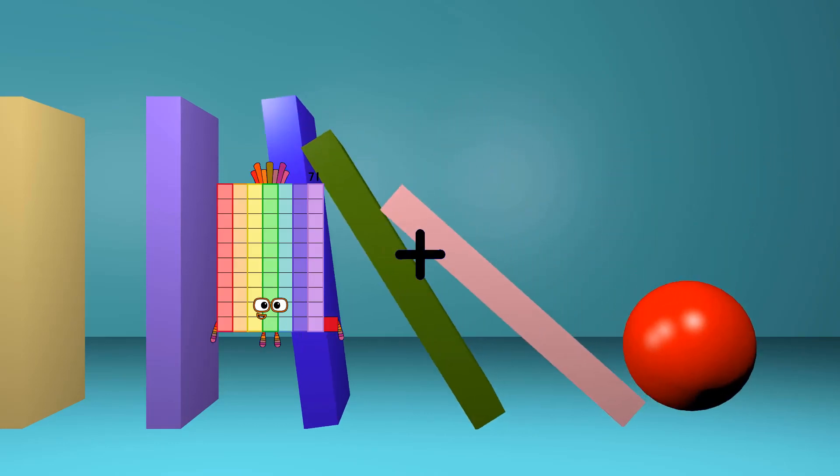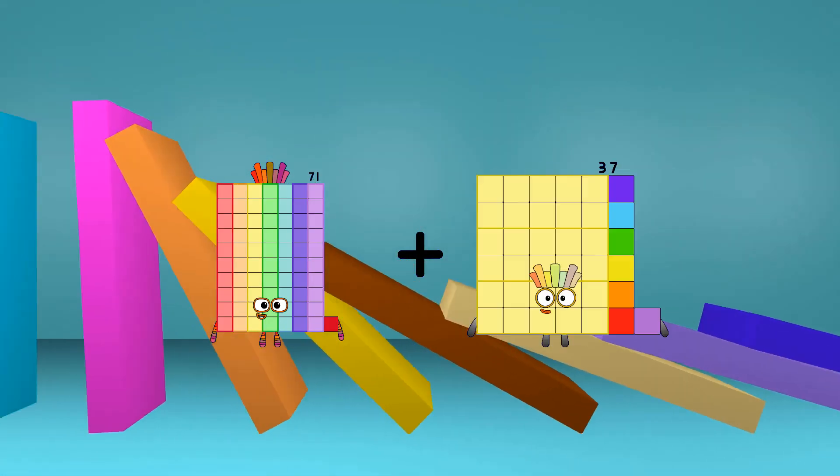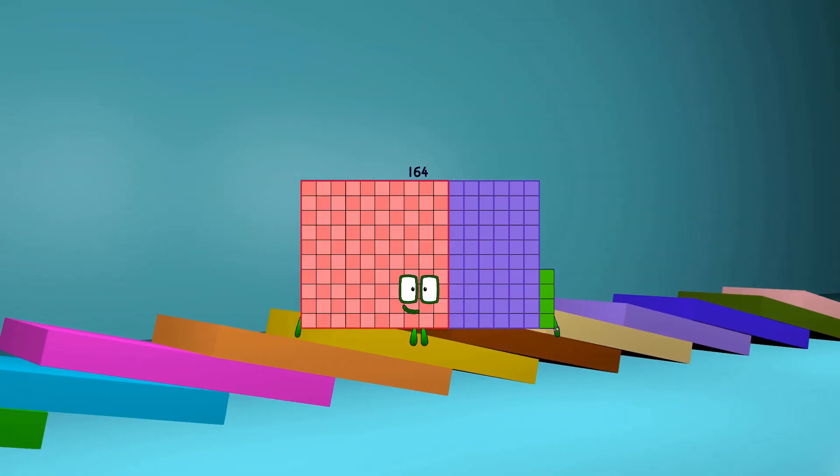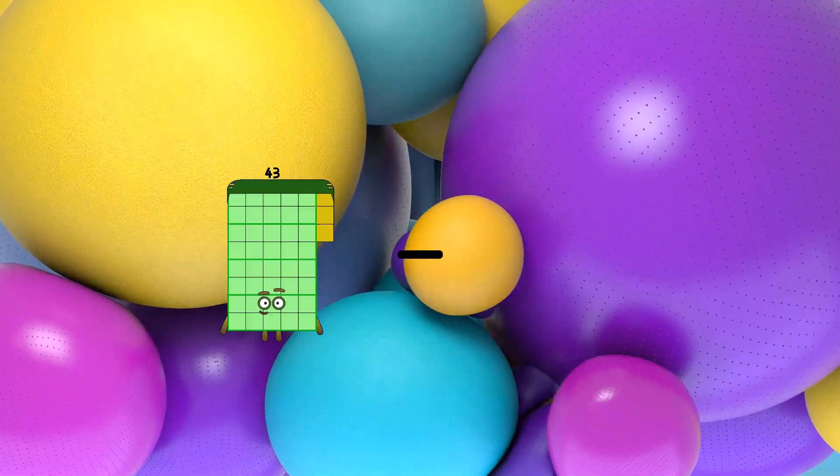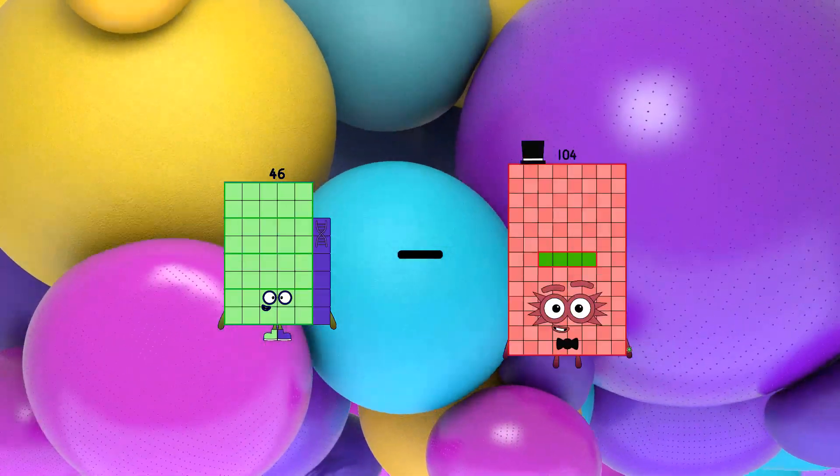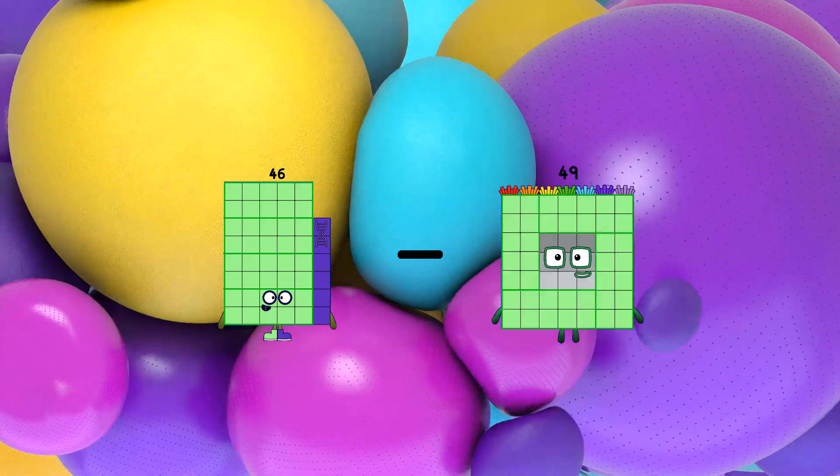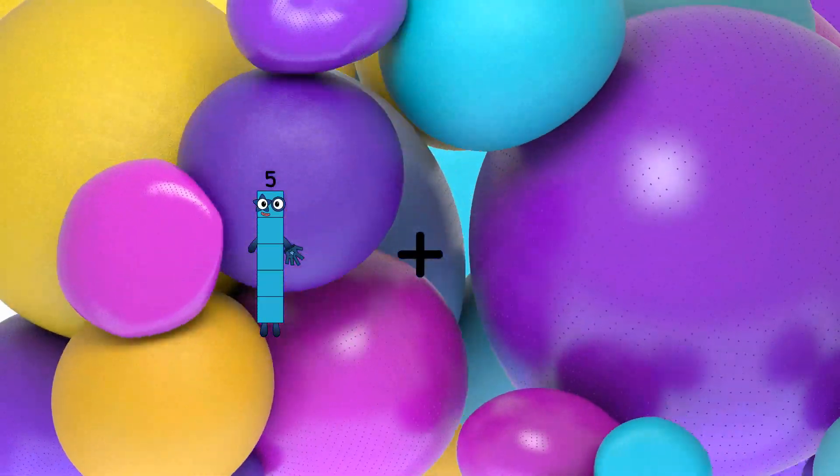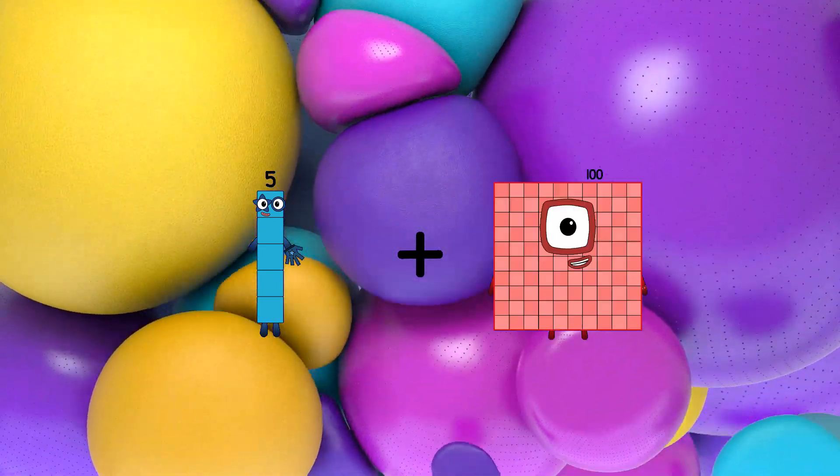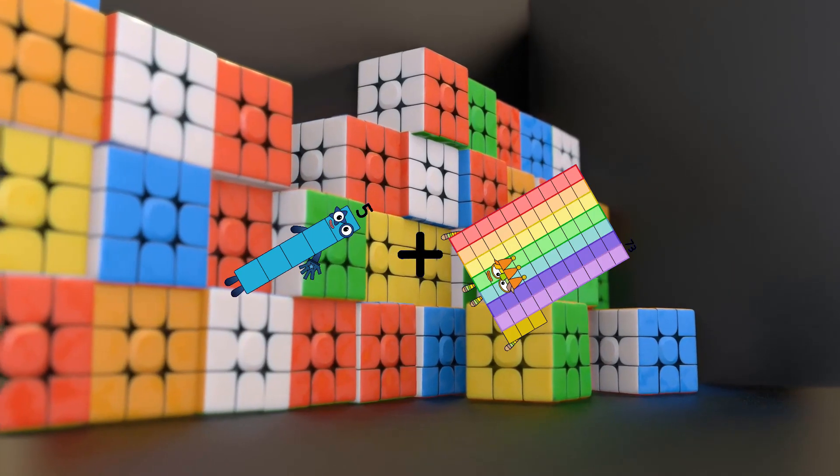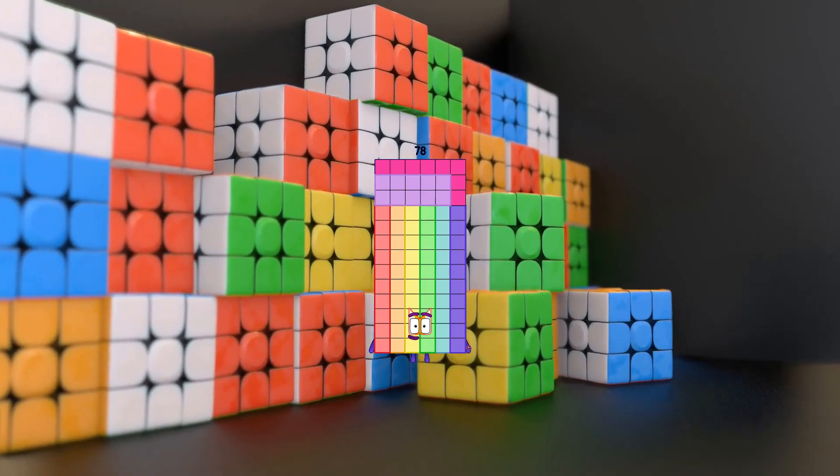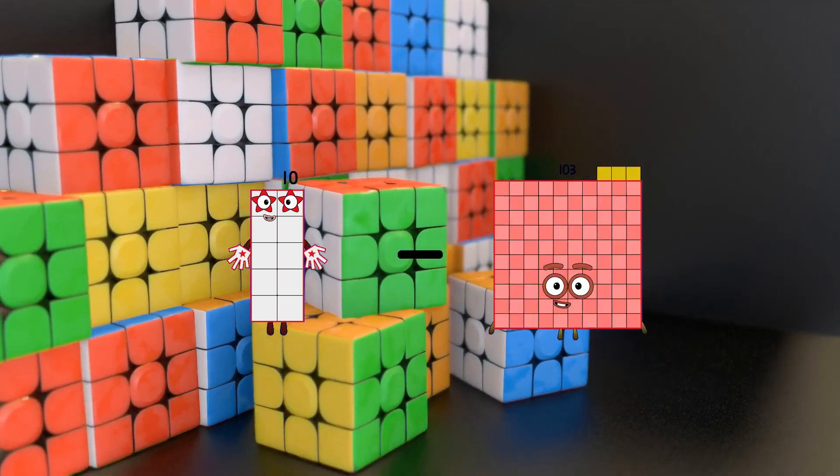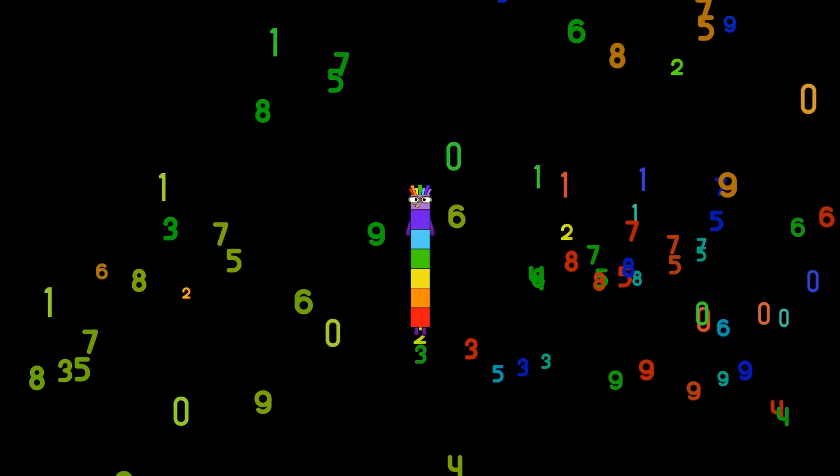71 plus 93 equals 164. 46 minus 22 equals 24. 5 plus 73 equals 78. 10 minus 3 equals 7.